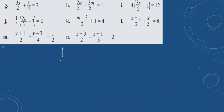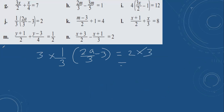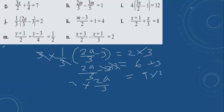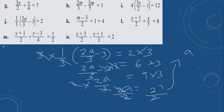Then problem j: 2a over 3 minus 3 equals 2. Multiply by 3. 3 and 3 cancel. Remove minus 3 by doing the opposite plus 3 on both sides. These cancel. 2a over 3 equals 9. Multiply by 3. 3 and 3 cancel. 2a equals 27. Divide by 2. a is equal to 27 divided by 2, which is 13.5.